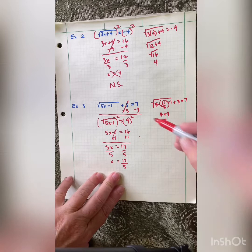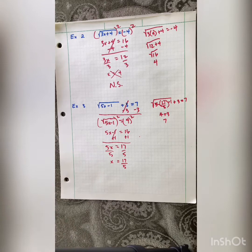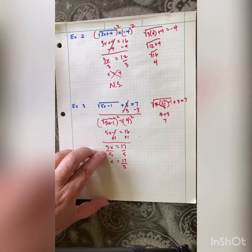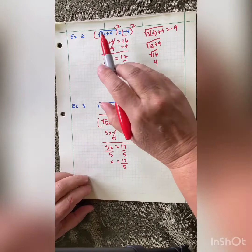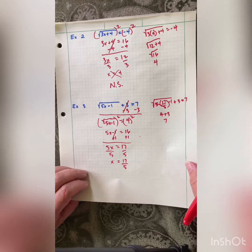Notice why this one worked and the previous one didn't: when we have a square root equaling a negative number, the original equation has no real solutions because a principal square root cannot equal a negative answer. Remember, when we use the radical sign, our answer can only be positive.